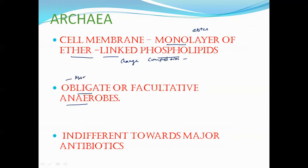They are obligate or facultative anaerobes. Obligate means they live in the absence of oxygen — if oxygen is present they get killed, so for them oxygen is poison. Facultative anaerobes can live in aerobic conditions, but if oxygen is absent they switch to an anaerobic method.